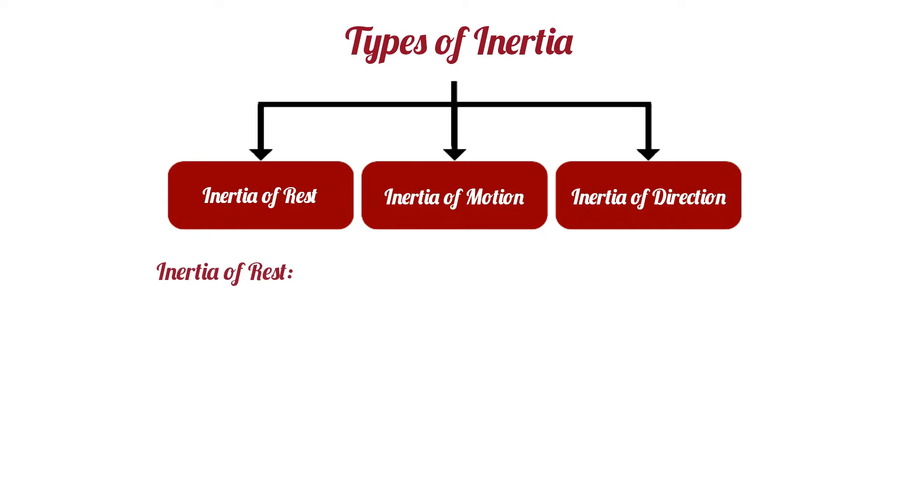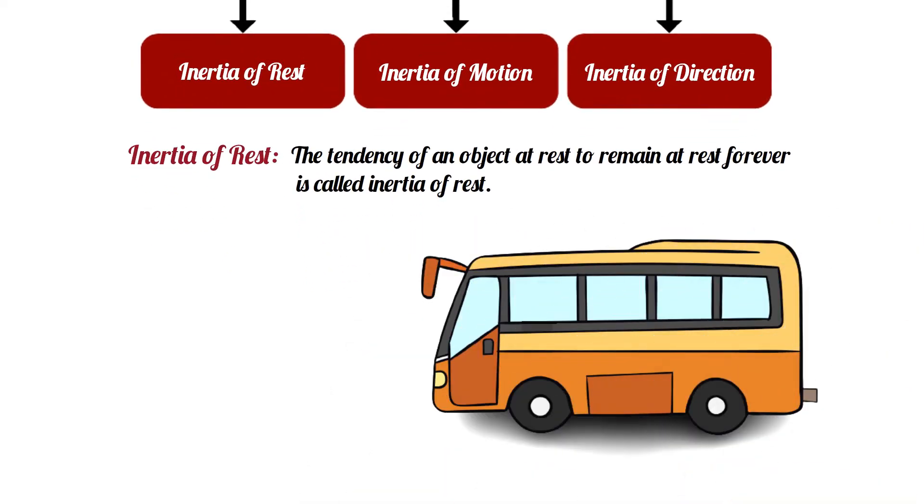Inertia of rest. The tendency of an object at rest to remain at rest forever is called inertia of rest. Probably you noticed that when a car starts moving suddenly, the seated passenger or the standing passenger leans back. It happens because of the inertia of rest.